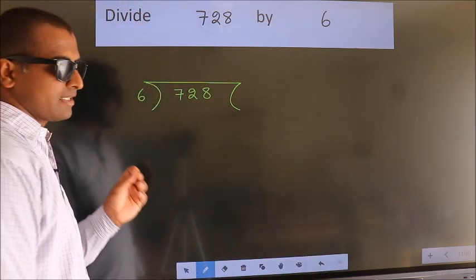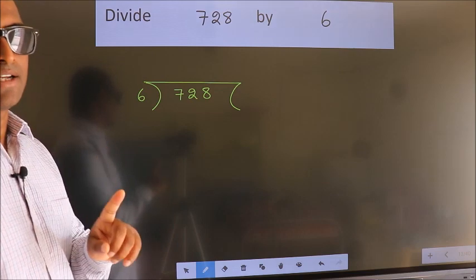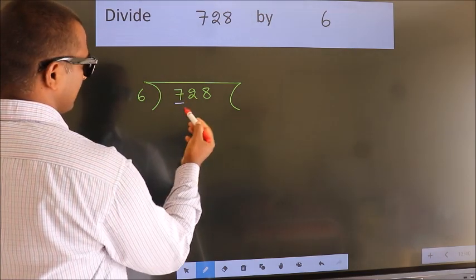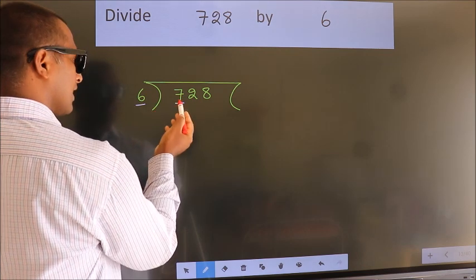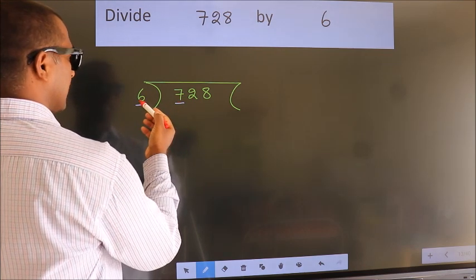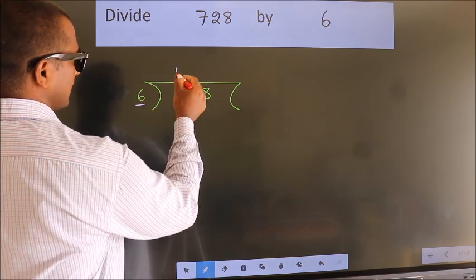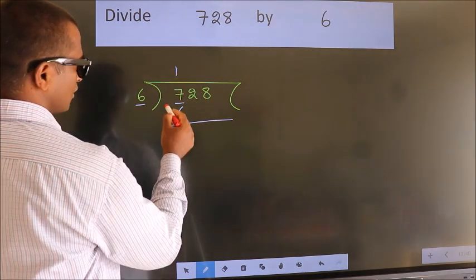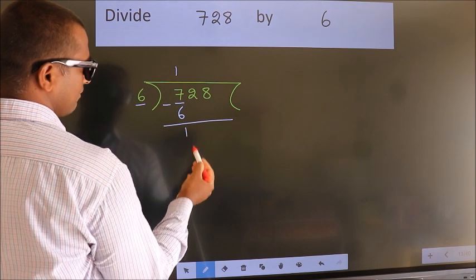This is your step one. Next, here we have 7, here 6. A number close to 7 in the 6 table is 6 times 1, 6. Now we should subtract, we get 1.